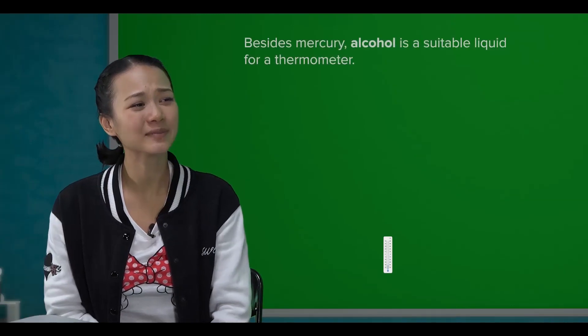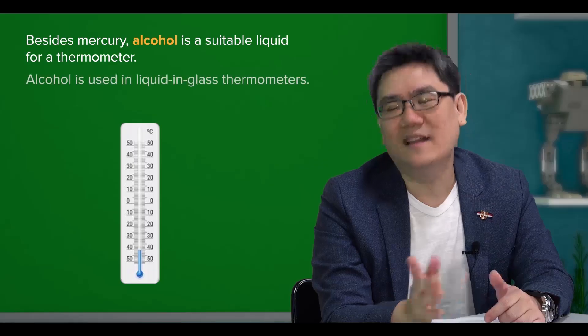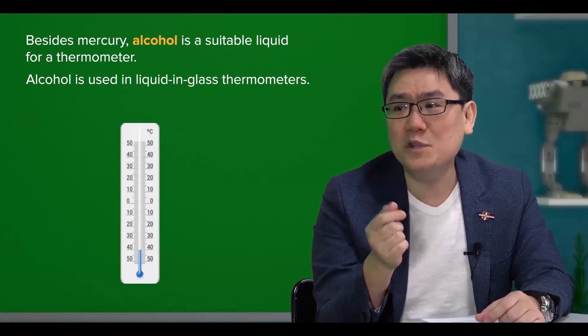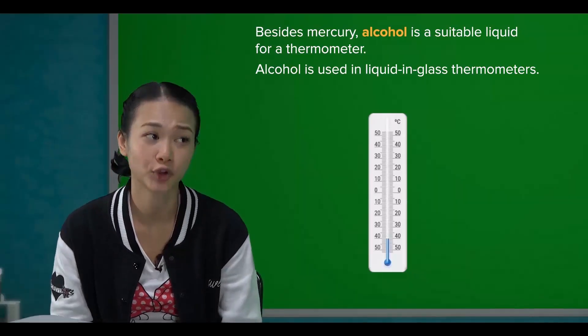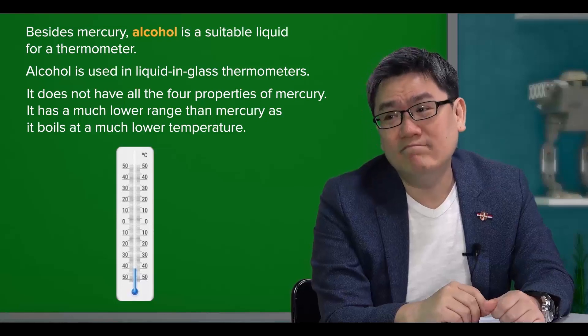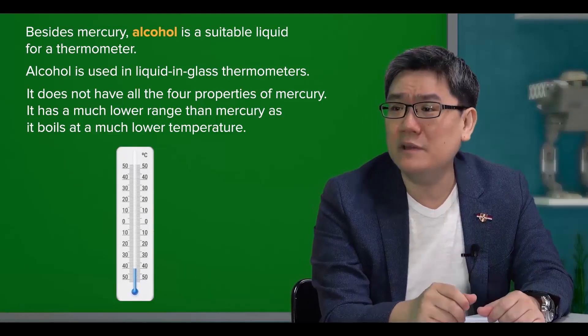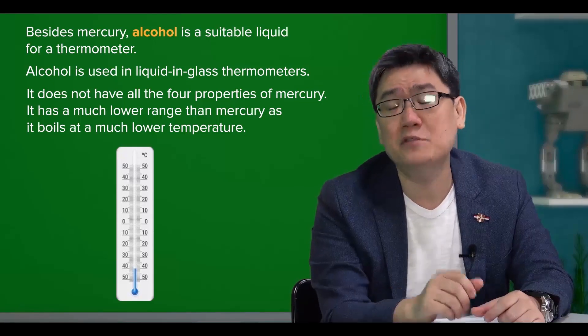So, I'm assuming that besides mercury, alcohol is another suitable liquid for a thermometer? Yes, alcohol is used in liquid in glass thermometers as well. It has all the four properties as well? Not all the properties. It has a much lower range than mercury as it boils at a much lower temperature as compared to mercury.